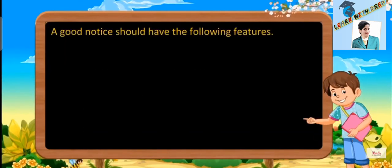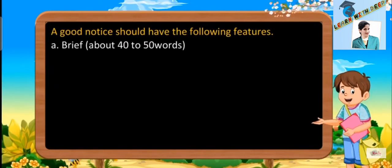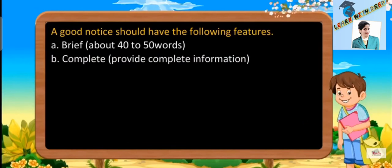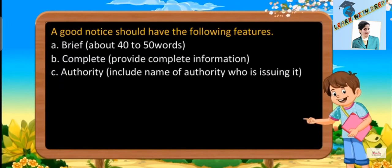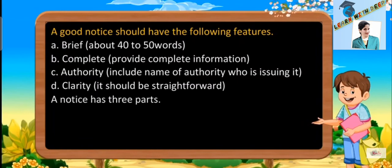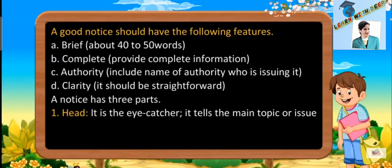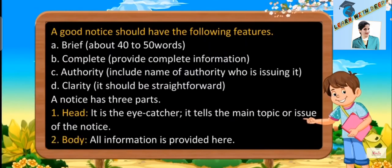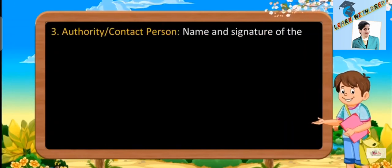A good notice should have the following features: Brief — about 40 to 50 words. Complete — provide complete information. Authority — include the name of the authority who is issuing it. Clarity — it should be straightforward. A notice has three parts: Head, which is the eye-catcher and tells the main topic or issue of the notice; Body, where all information is provided; and Authority or contact person.